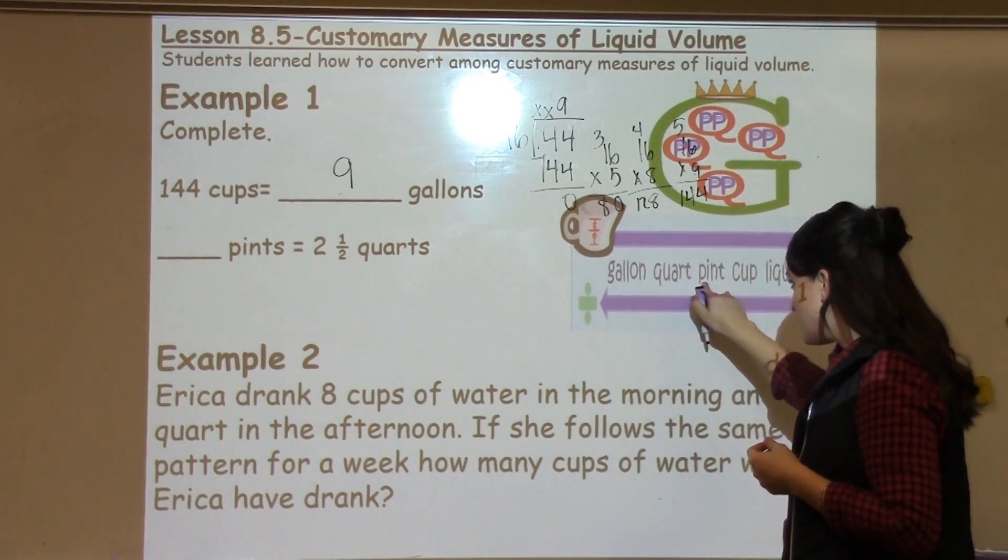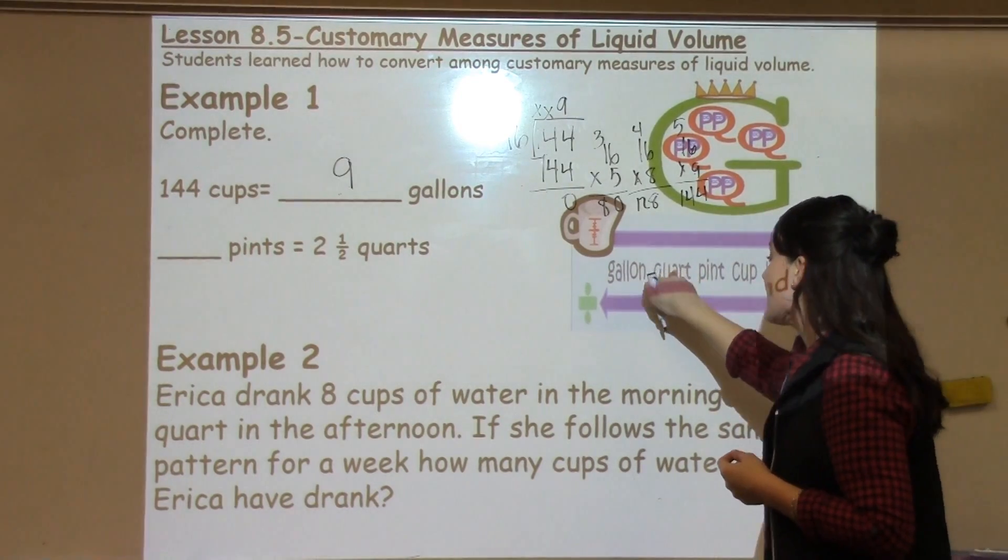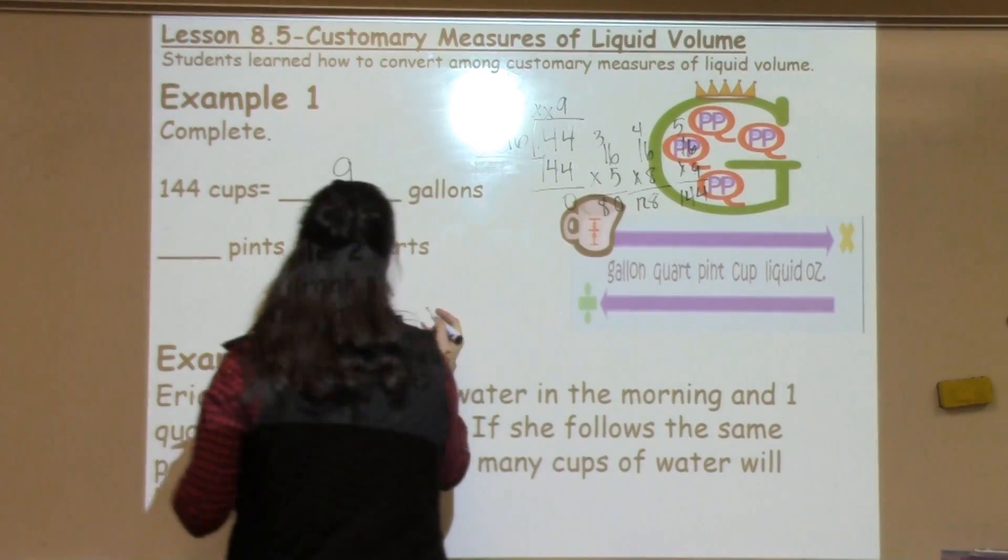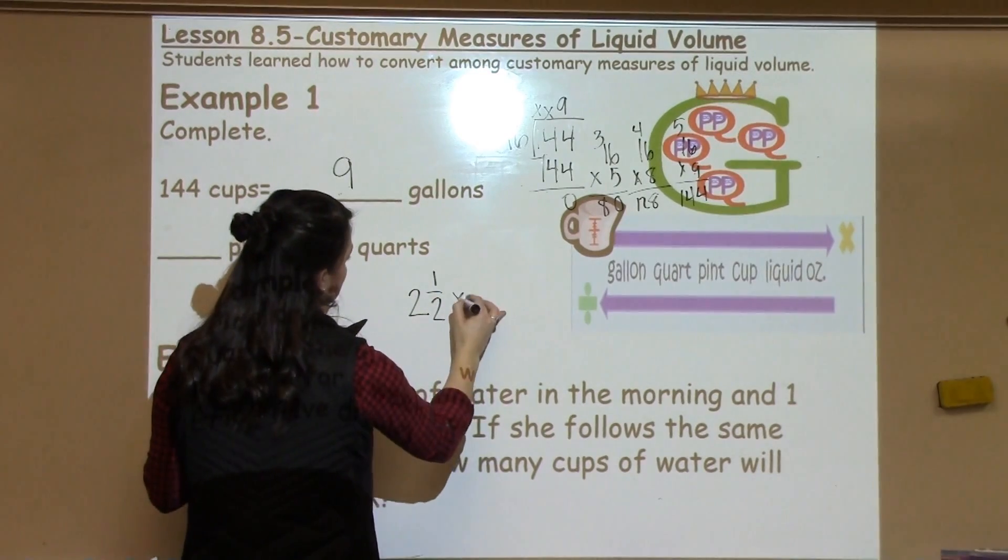So, I have quarts and I want to move to pints. I have quarts, I want to move to pints. I'm moving to the right, which means that I need to multiply 2.5 times something.